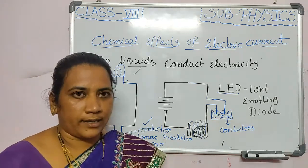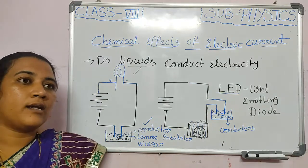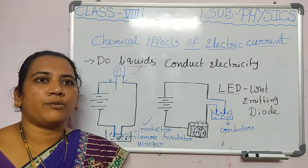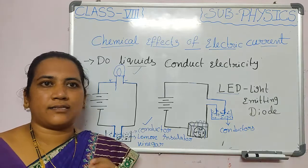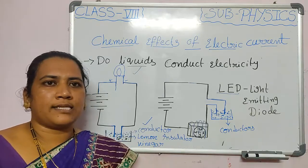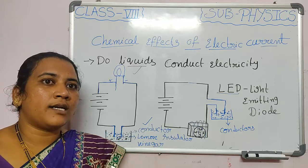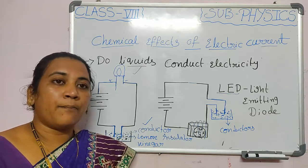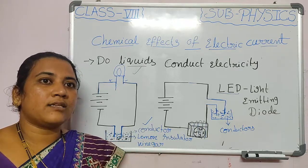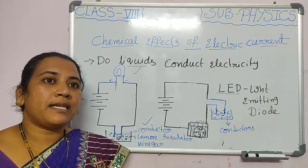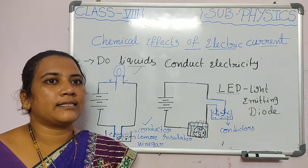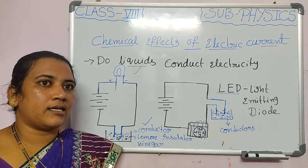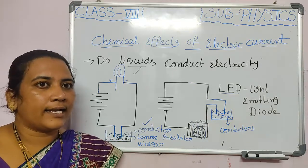Water is a conductor, but salt water is the best conductor. Distilled water, however, has an absence of minerals and salt, so it does not conduct electricity. Pond water, salt water, and sea water all contain minerals that help water conduct electricity — allowing electrons to flow. We call these liquid conductors.